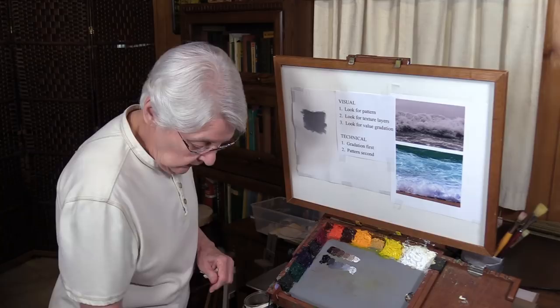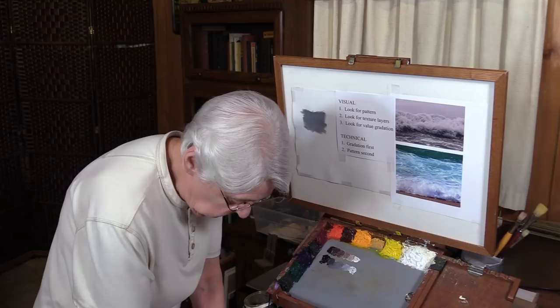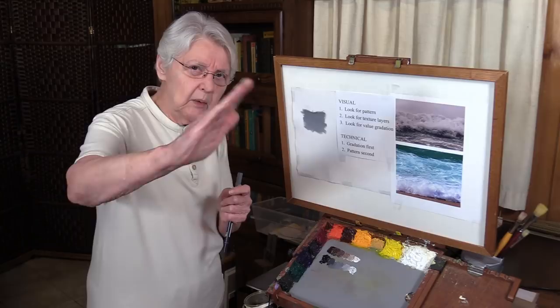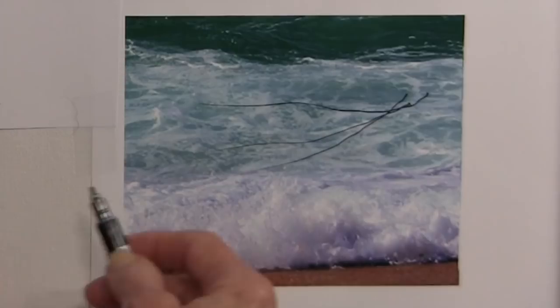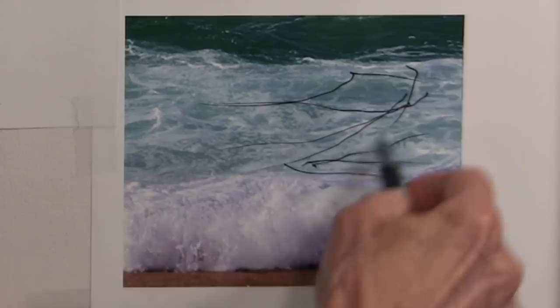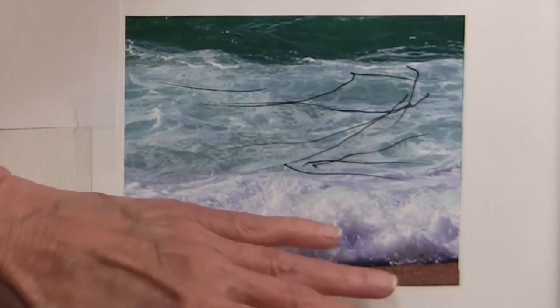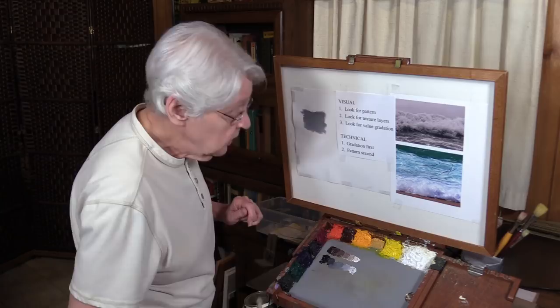Step two is observation of pattern. If you're out looking at the ocean, you need to locate the general pattern of movement because the ocean keeps moving. If you snap a photograph and print it out, take a pen and find the pattern of movement. We've got a pattern moving this way, another moving that way, another up here moving that way. And in the shadow areas of this pattern, the values are very close. Where the light is hitting, the light is much lighter and the values around it are a little bit darker.